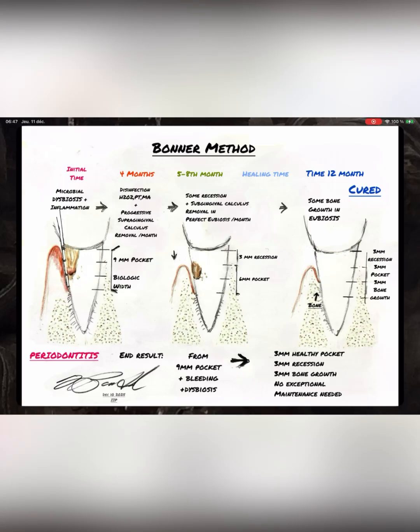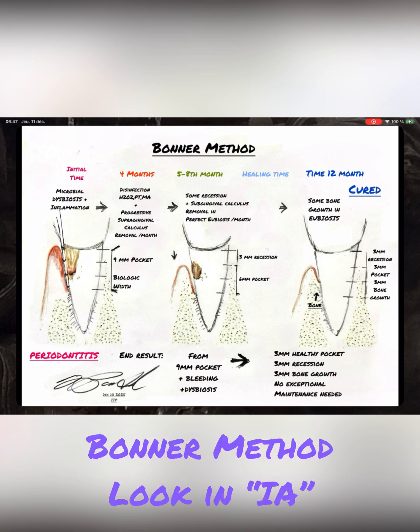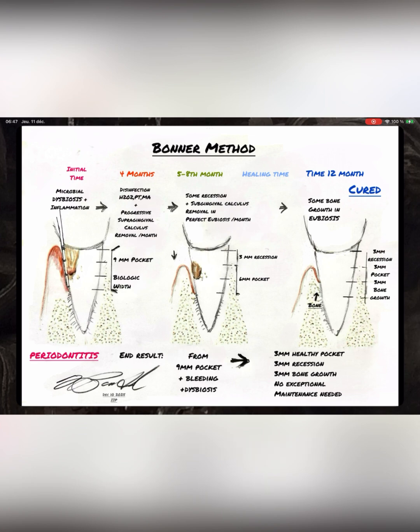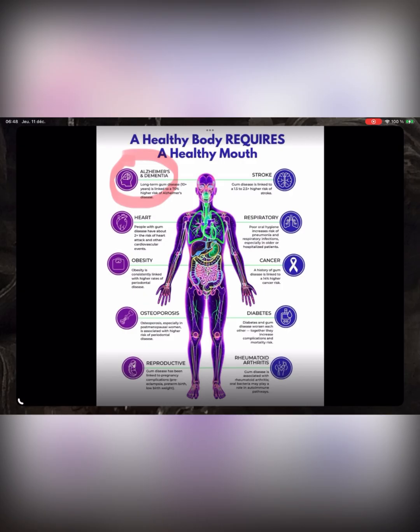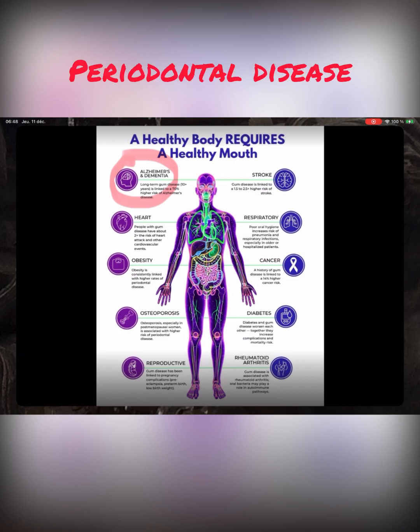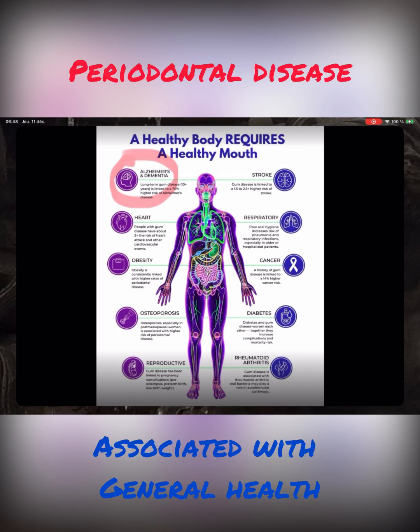Hi, I'm Dr. Mark Bonner, and I am here just to explain the Bonner method so you can cure from periodontal disease. First, start with disinfection — you can use medication: hydrogen peroxide, baking soda and salt, metronidazole to cure you.